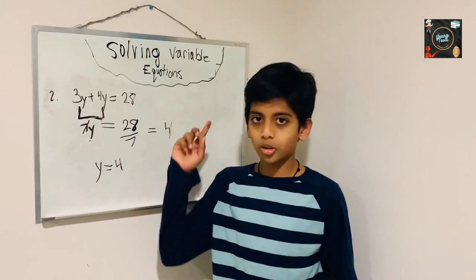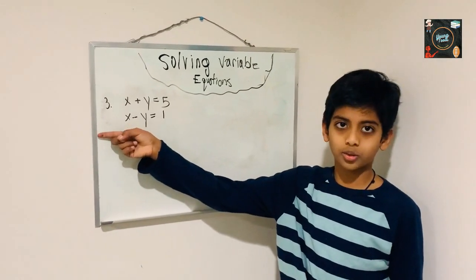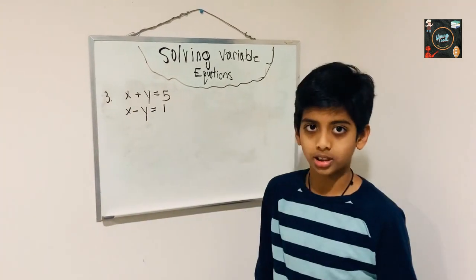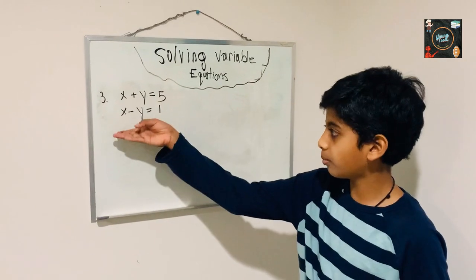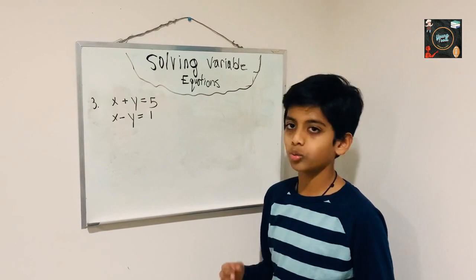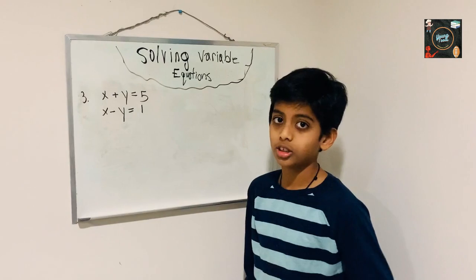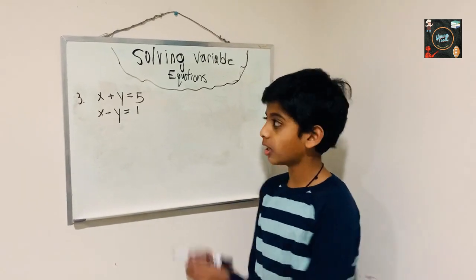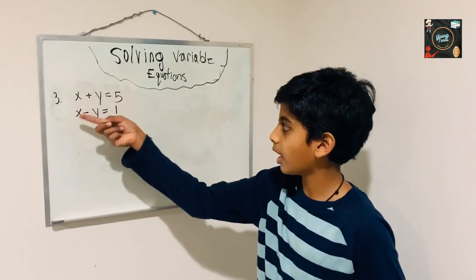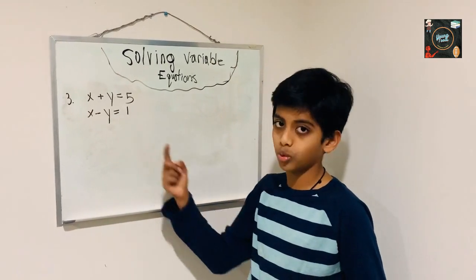Now let's move on to the third equation. In this equation we have two different equations, and in both equations we have the same variables x and y. In both equations, x and y are the same value, so we have to keep that in mind. The equations are: x plus y is equal to 5, and x minus y is equal to 1.